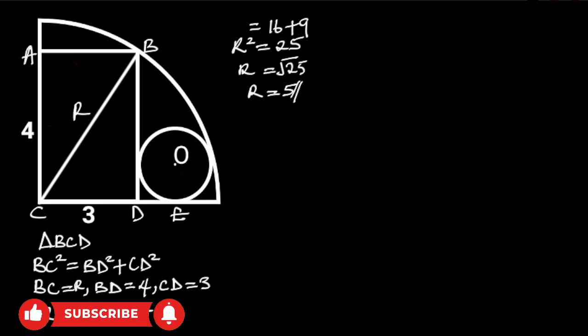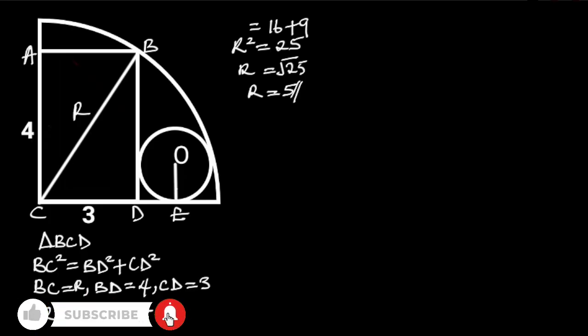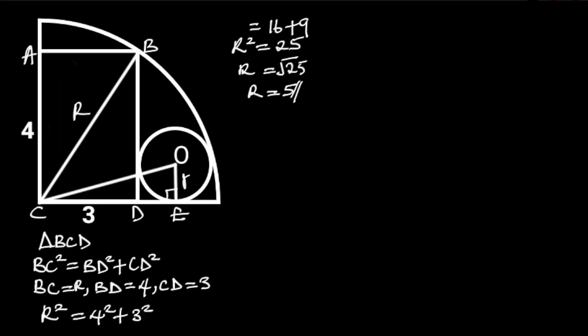Next, let's focus on the circle. Let's draw a perpendicular line from O to E and a straight line from O to C. Let the radius of this circle be a lowercase r. Since the radius of the quarter circle is 5, it follows that OC is equal to 5 minus r.